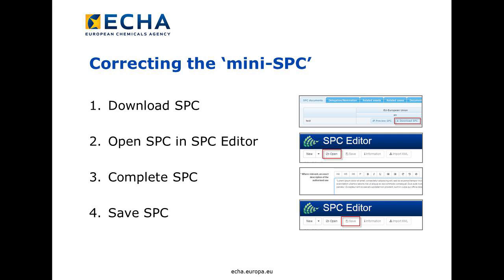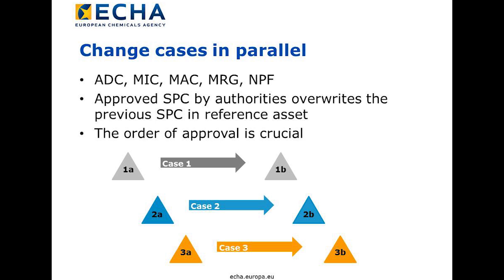For example, before the applicant starts a renewal case, the applicant needs to download the SPC, open it with the SPC editor, and complete it. In R4BP3, it is possible to have several changes on the same asset at the same time. This affects the following change cases for standard and simplified authorizations: administrative change on request, minor change, major change, merge of assets, and addition of a new product family member.